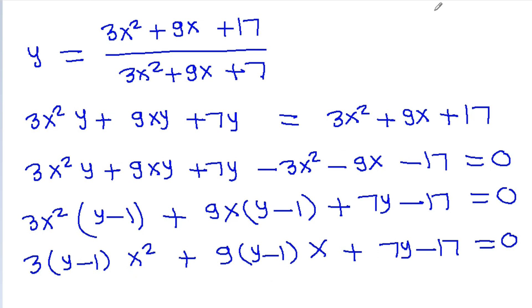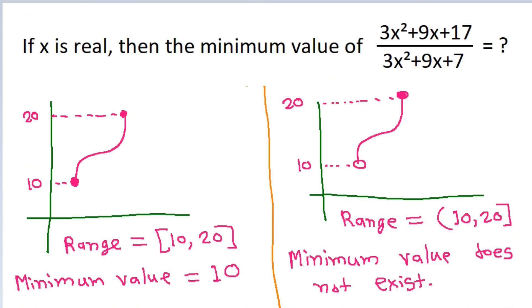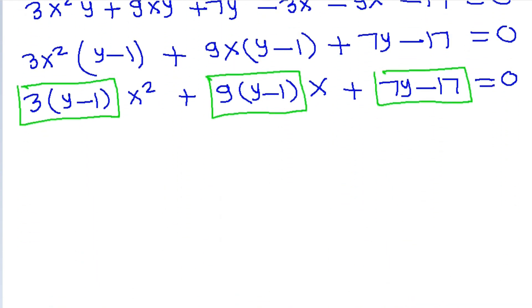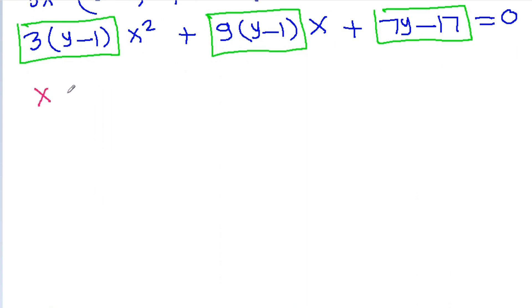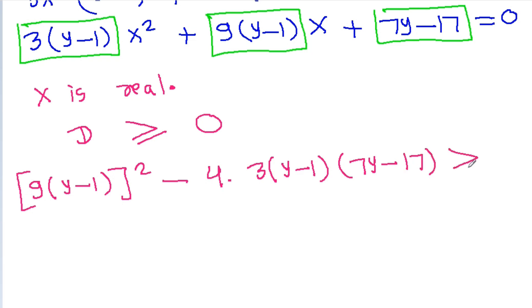It is a quadratic equation in x of the form ax² + bx + c = 0. We have given x is real, and since x is real, the discriminant D must be greater than or equal to 0. Here D = b² − 4ac, where b = 9(y−1), a = 3(y−1), and c = 7y − 17.